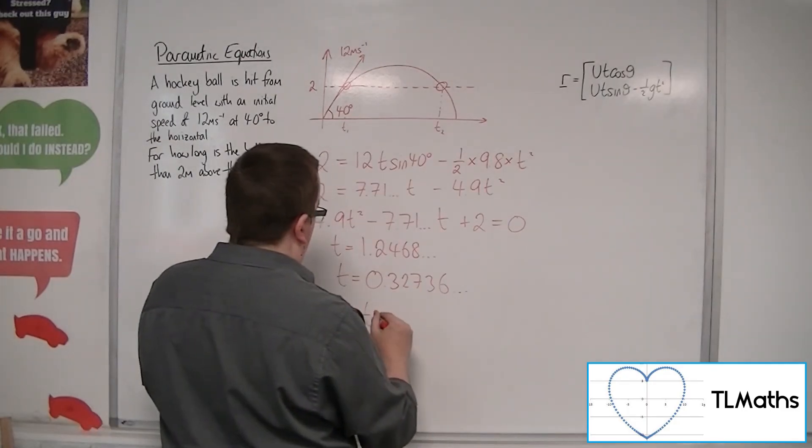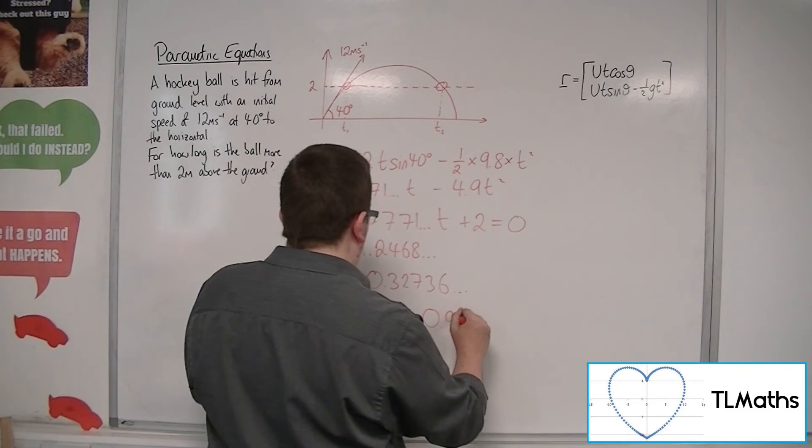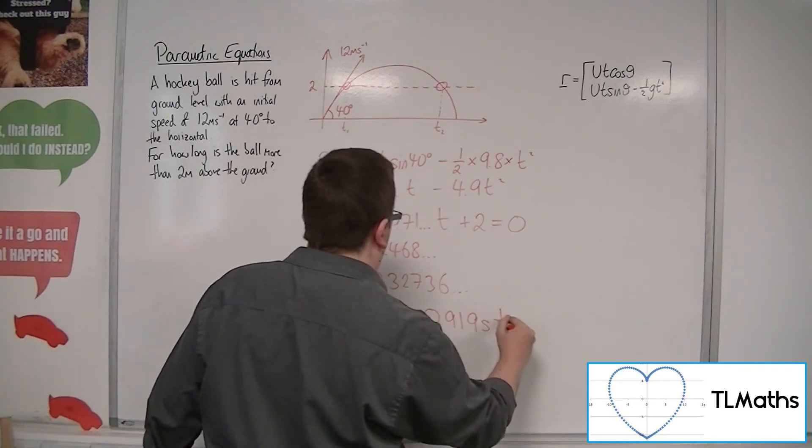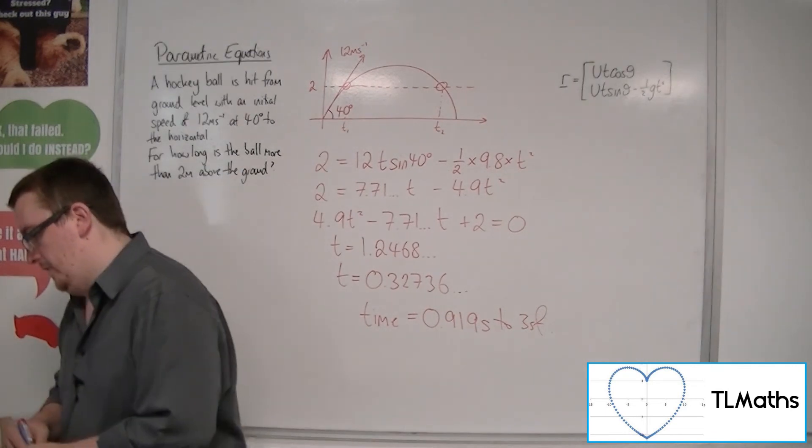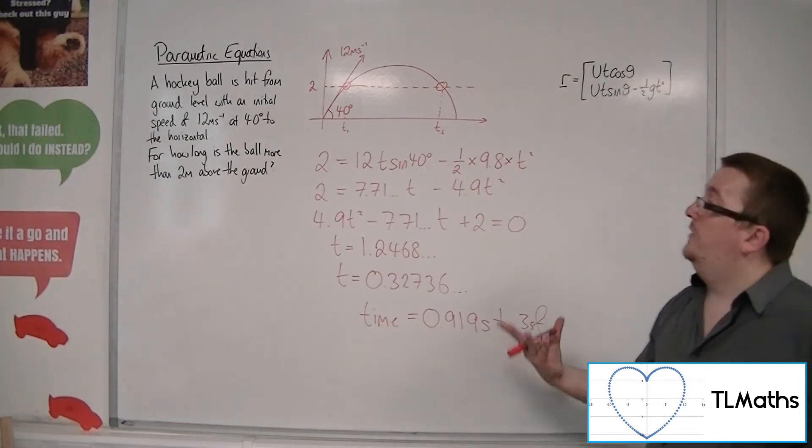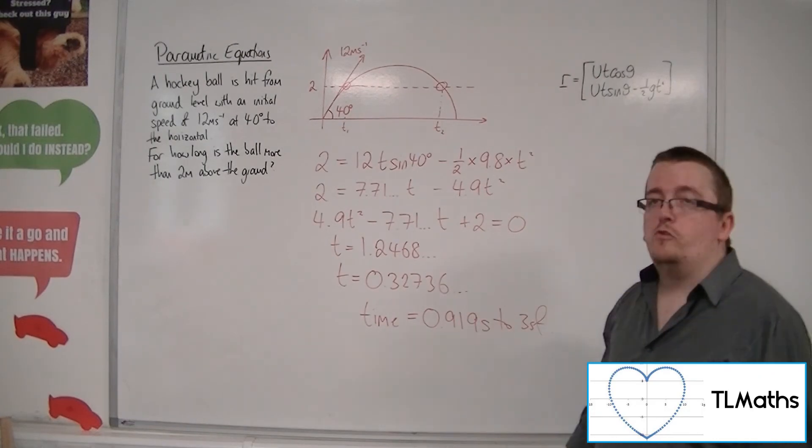So the time is 0.919 seconds to 3 significant figures. And so that is how long the ball is 2 metres above the ground.